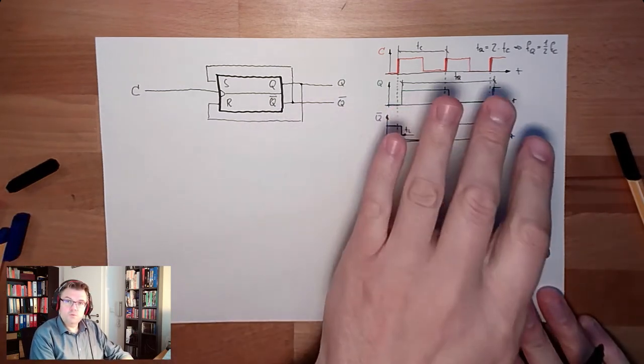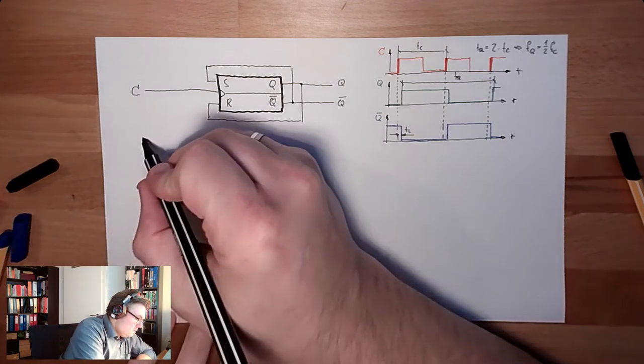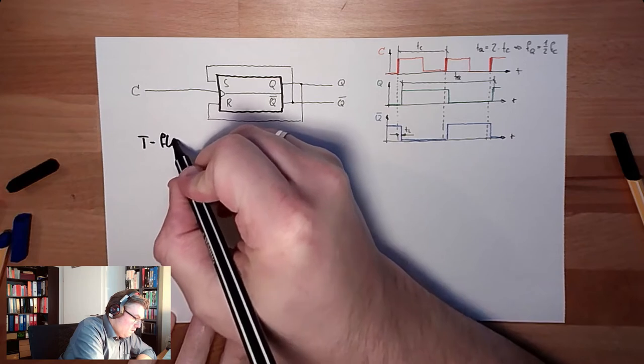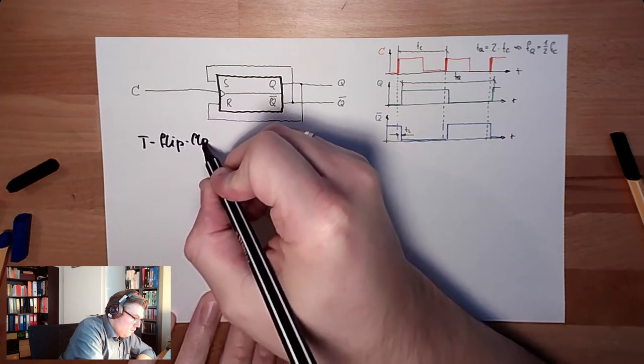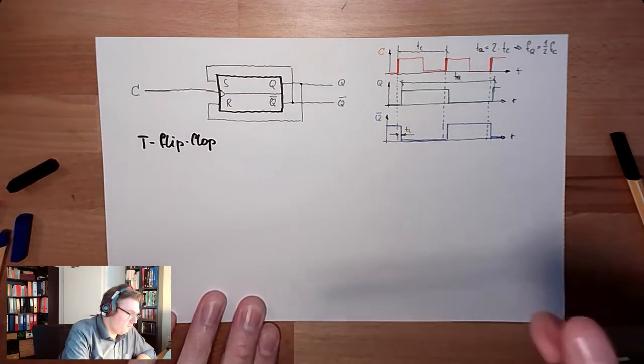Since the output is toggling with every impulse on the input, this is called T flip-flop. Toggle flip-flop. T flip-flop or toggle flip-flop.